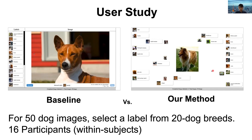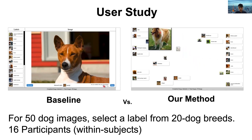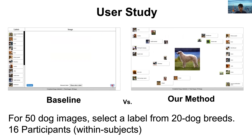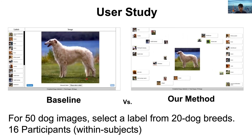In the traditional interface, users need to go through all the labels and try to find the best possible label for the image. However, in our spatial layout interface, users are allowed to organize concepts of labels and images on the open space before selecting a label for an image.